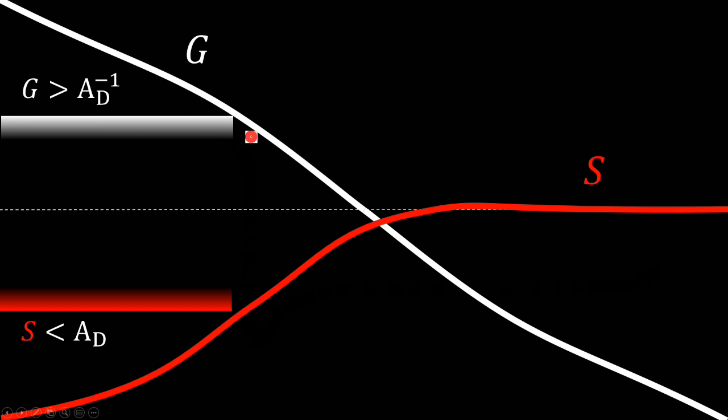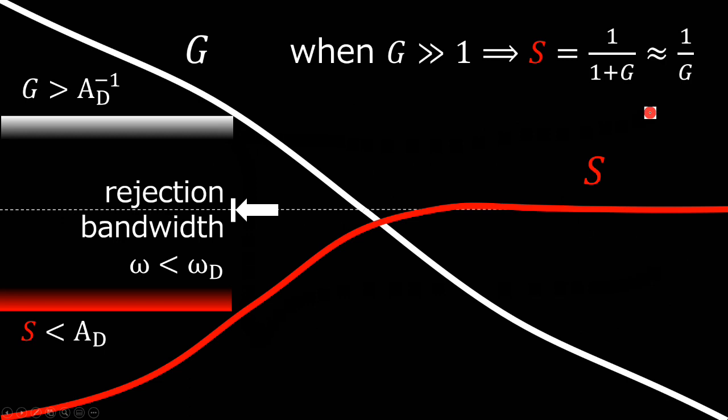Because for high values of the open loop gain, the sensitivity function approaches the inverse of G. So, having S lower than attenuation AD is equivalent to asking G to be larger than the inverse of AD in the same bandwidth.